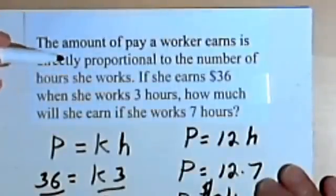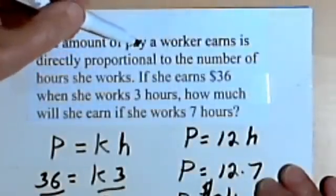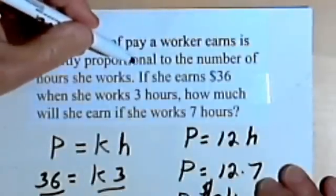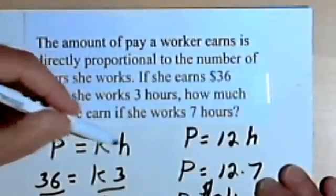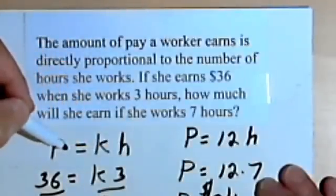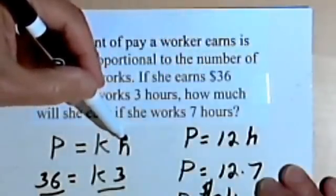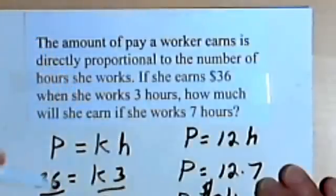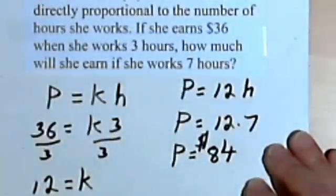So this is basically the same as the previous problem. We've got something that's the same as a y, the pay, is directly proportional to or varies directly as. So now I know that we're dealing with direct variation. And what it varies with is the number of hours. So we just have our p equals kh, we plug in the numbers, find the k, and then plug in the number for the specific problem they're asking us.